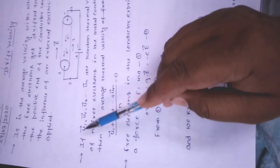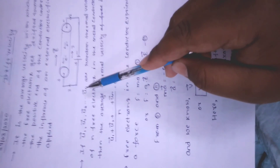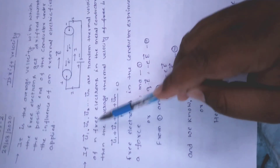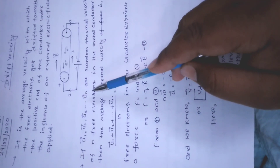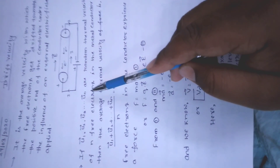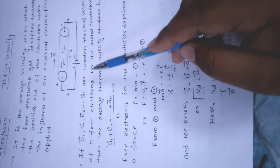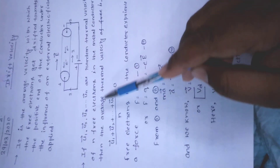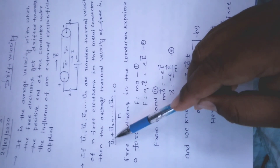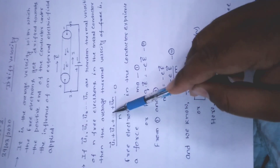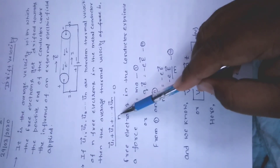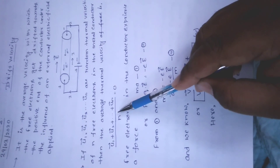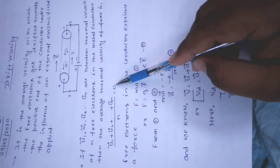इसको mathematically expand करने के लिए मान लेते हैं कि u1, u2, u3, ... un — ये n free electrons की random thermal velocities हैं। Average thermal velocity = (u1 + u2 + u3 + ... + un) / n। हम जानते हैं कि किसी भी metallic conductor में average thermal velocity हमेशा 0 होती है।